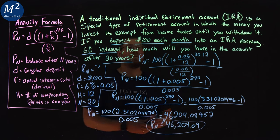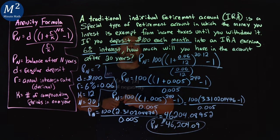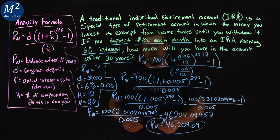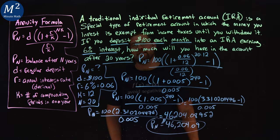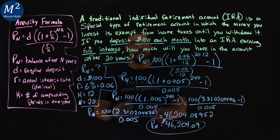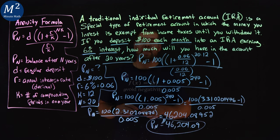So after all of that lovely work, we will have in our account after 20 years, $46,204.09. Well, I hope you learned something here on the annuity formula. And if you did, don't forget to like this video. And as always, thanks for watching.